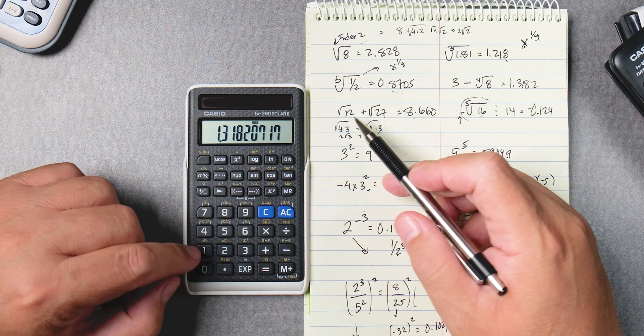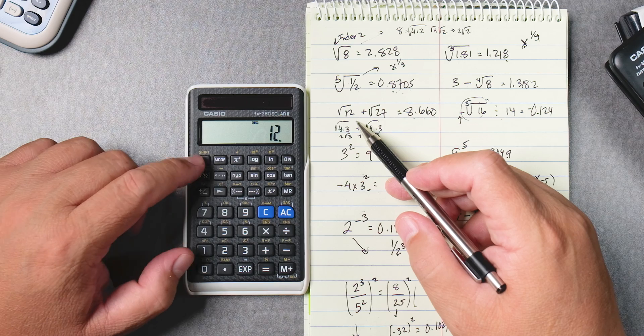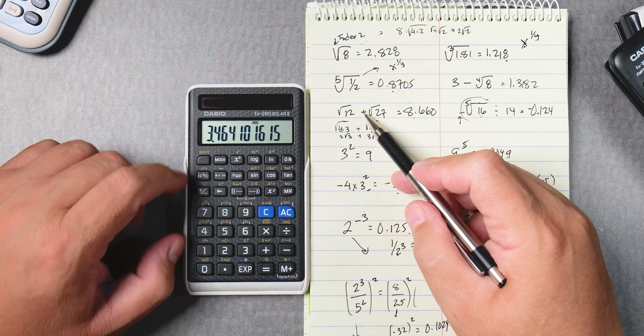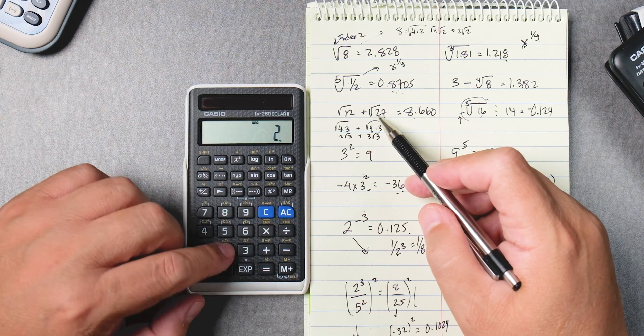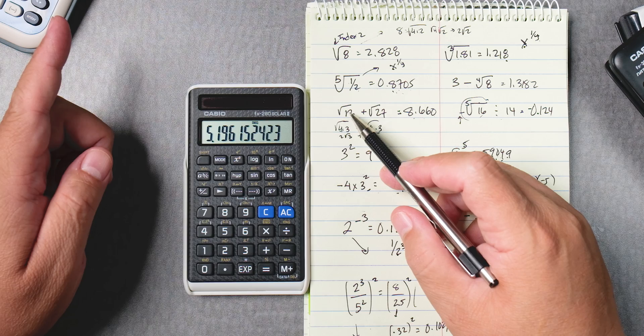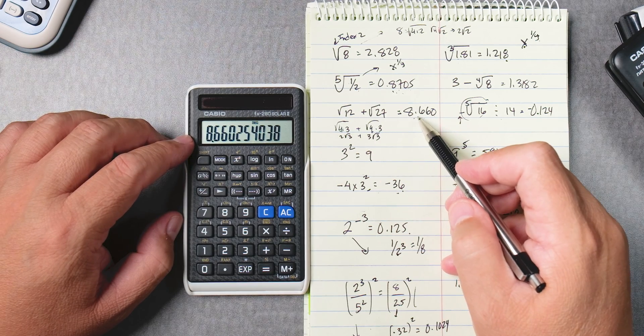Okay let's do this one. This one's 12 square root which is shift x squared plus 27 shift square root. It keeps the value of square root in memory. Press equals 8.660.